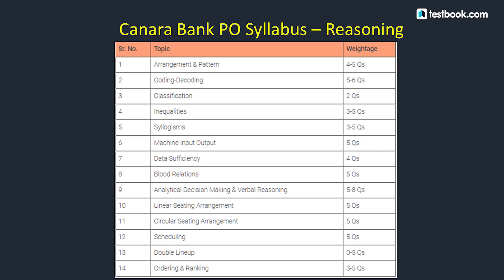Machine Input-Output: 5 questions. Data Sufficiency: 4 questions. Blood Relations: 5 questions covering general blood relations, family tree, or coded blood relations. For Analytical Decision Making or Verbal Reasoning, there will be 5-10 questions covering analytical decision making, statement and conclusion, statement and assumption, statement and inference, cause and effect, course of action, and critical reasoning.